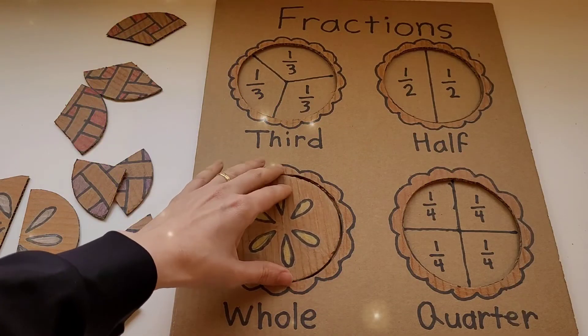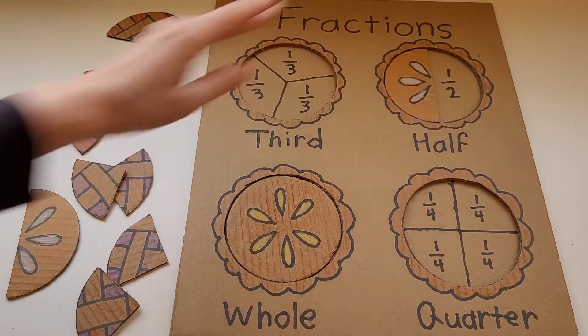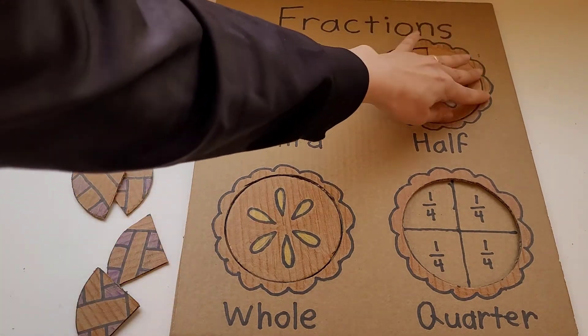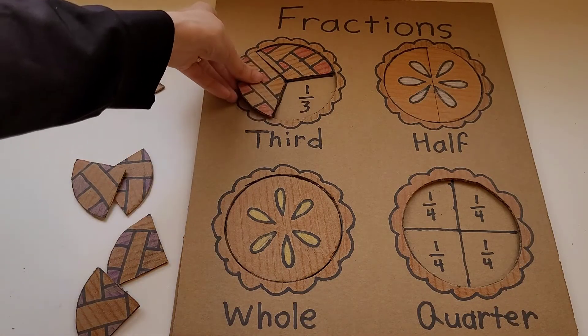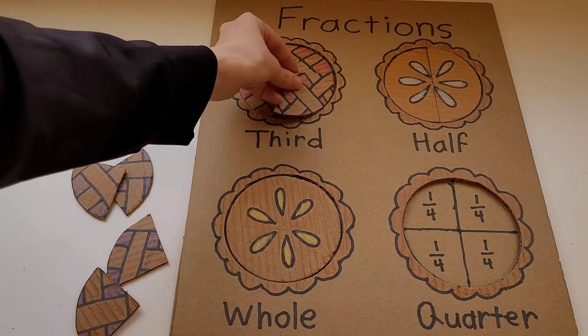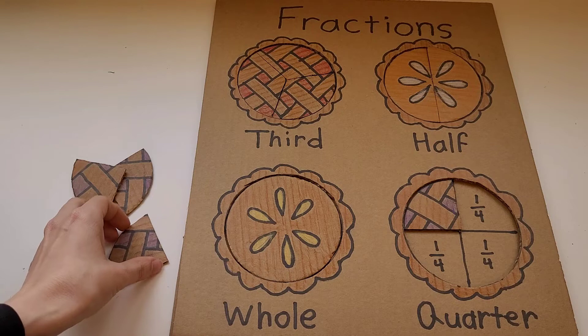The final step to our activity is writing each type of fraction. We're going to write down the name of the fraction and then we're going to mark them down on the bottom part of the cardboard. After that the students can match the fraction to the correct pie.